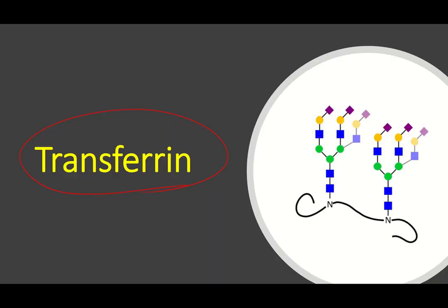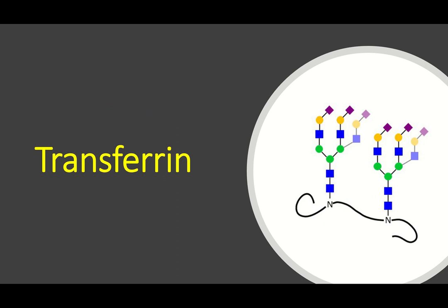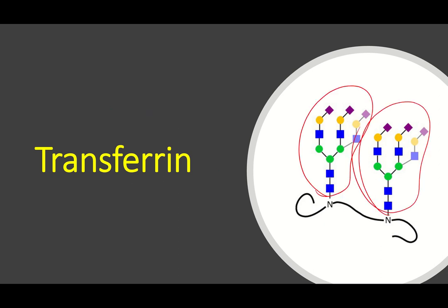Look at the structure of transferrin. The oligosaccharide chains are covalently attached to the amide nitrogen of asparagine, so it is an N-linked glycoprotein. You can see that the oligosaccharide chains are branched — that is the property of glycoproteins.